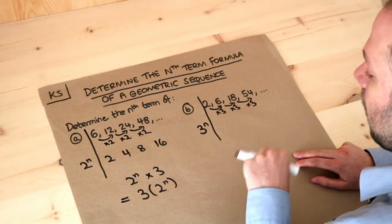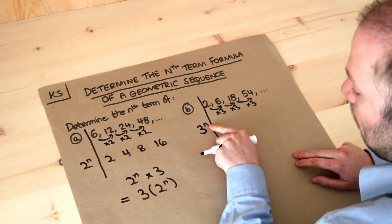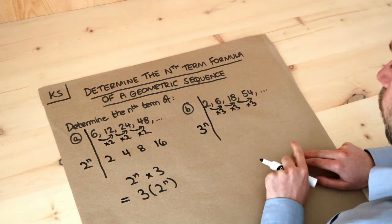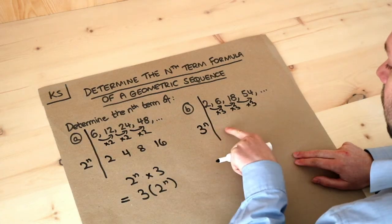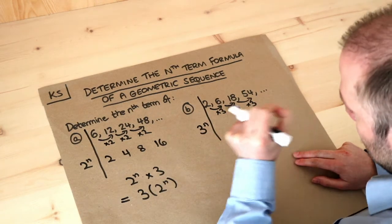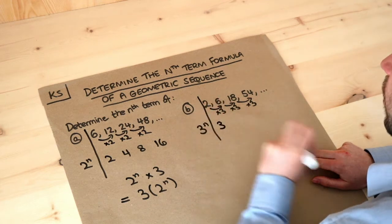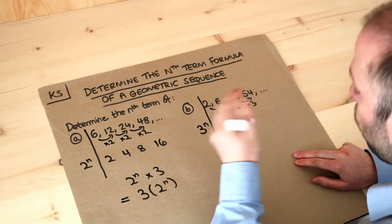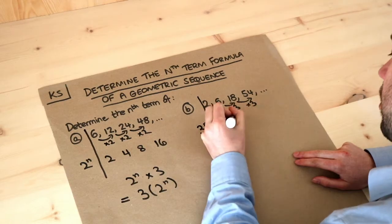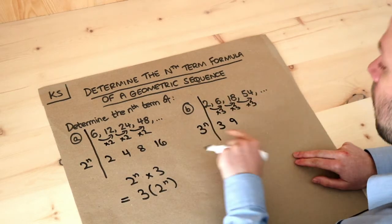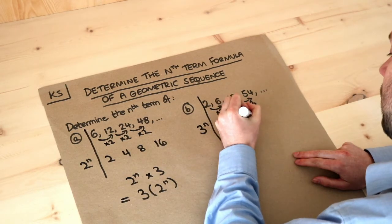This is known as an exponential term, by the way, because our variable is in the power. So what would 3 to the n give us as a sequence? If it's the first term, n is 1, so 3 to the power of 1 is 3. The second term when n is 2, 3 to the power of 2 is 9. The third term? 3 to the power of 3 is 27. That will probably be enough.